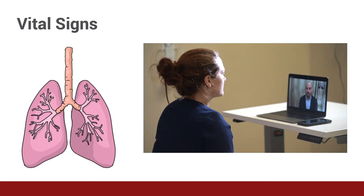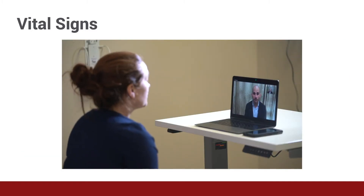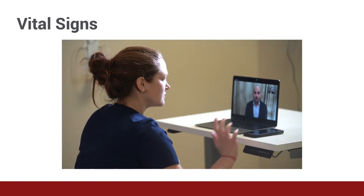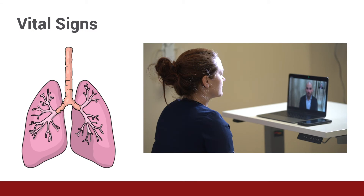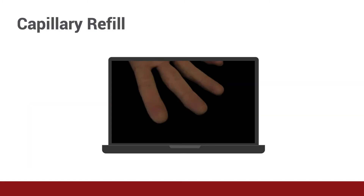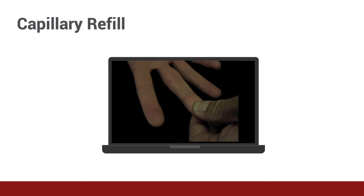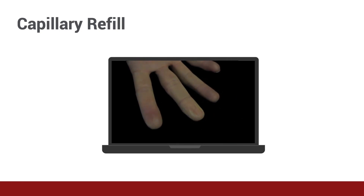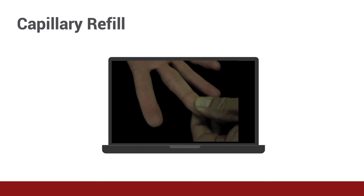Vital signs are still vital when seeing a patient via telehealth. Perhaps the most relevant vital sign for virtual visits with potential COVID-19 patients is the respiratory rate. You can observe respiratory rate by asking the patient to sit quietly for 15 seconds while you observe their breathing. Count the number of breaths and then multiply by four. Do not tell the patient you are counting their breathing, as this will cause the patient to breathe abnormally. You can also train the patient to calculate their own capillary refill. Instruct the patient to press firmly down on their finger and release, then count the seconds it takes for color to return to the finger.